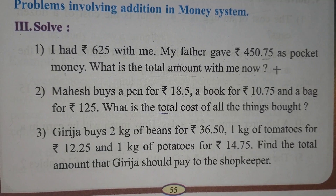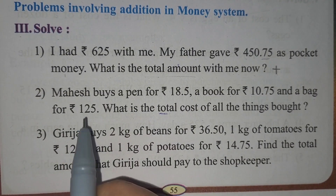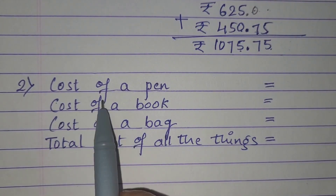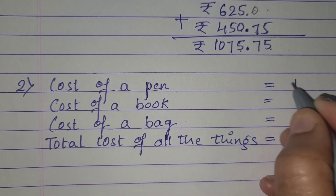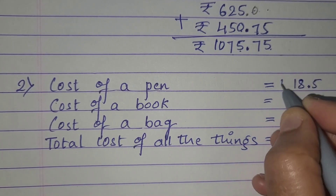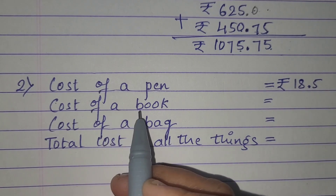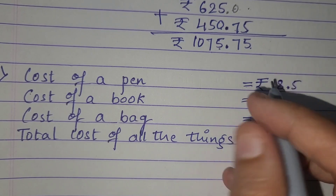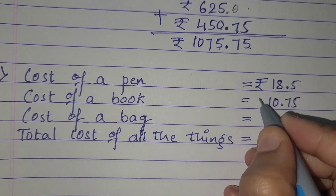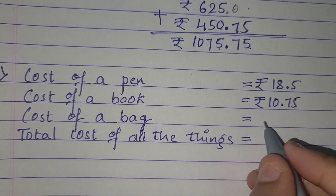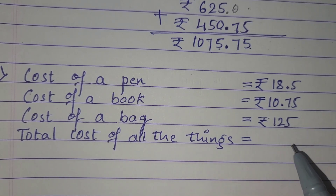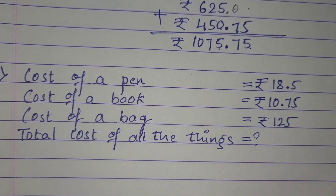So let's do it. First we have to write the statement. Cost of a pen — how much? It is 18 rupees 5 paise. Next, the second thing he bought is a book for 10 rupees 75 paise. Next, cost of a bag is 125 rupees. Now you have to calculate the total cost of all the things he bought — this is what you have to find. So let's write all this here.